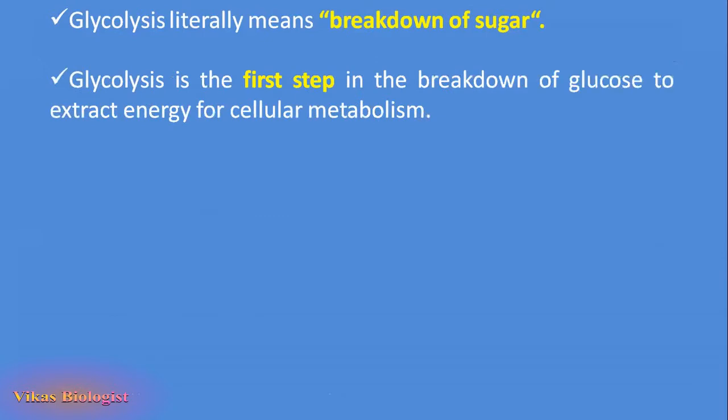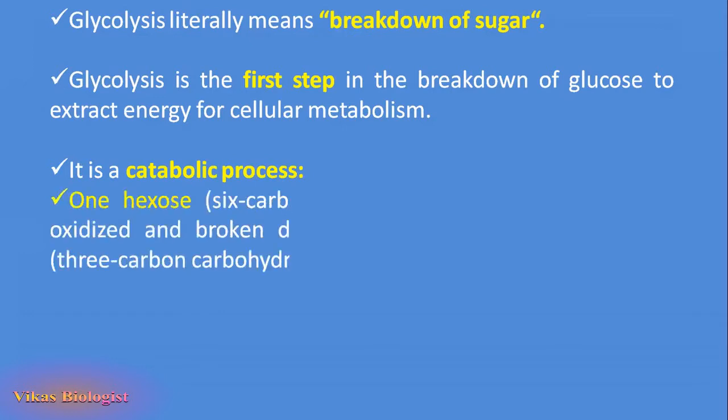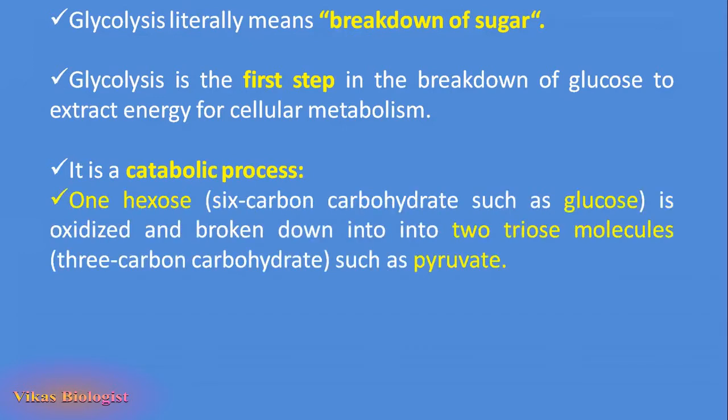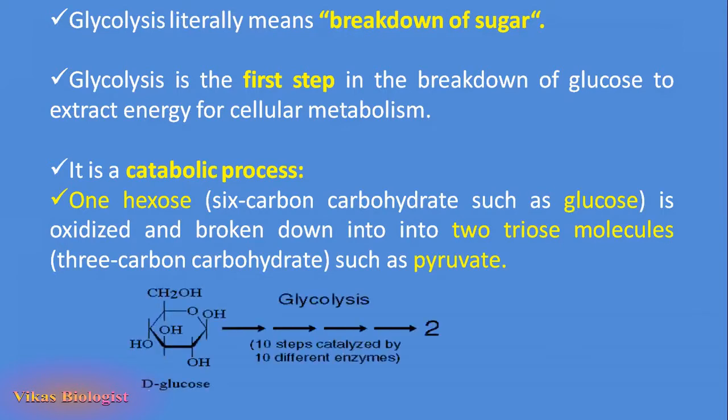What is glycolysis? Glycolysis literally means breakdown of sugars. It is the first step in the breakdown of glucose to extract energy for cellular metabolism. It is a catabolic process where one hexose such as glucose, a six carbon carbohydrate, is oxidized and broken down into two triose molecules such as pyruvate, a three carbon carbohydrate. This diagram shows the glucose conversion to pyruvate in the glycolysis process. It is a 10 step catalytic pathway involving 10 different enzymes.